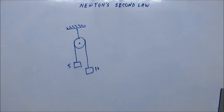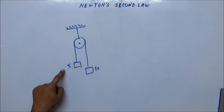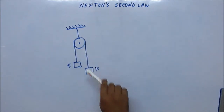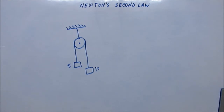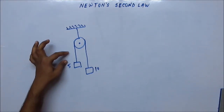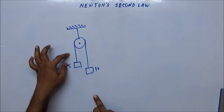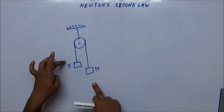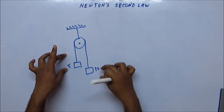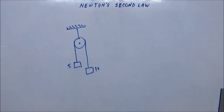This is a good problem to begin Newton's second law. Take a piece of paper and pen and work this properly. The first thing to appreciate is that the acceleration, velocity, and displacement of both blocks must be the same, because this is an inextensible string — the stretch is negligible and considered zero. So if one block goes up by x centimeters, the other must come down by x centimeters. The string will not slack, so displacement, velocity, and acceleration are all equal for both blocks.